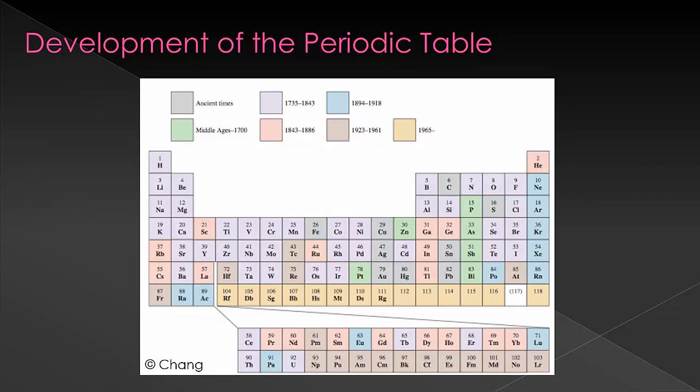After the elements were arranged by atomic number, we got a relatively modern version of the periodic table, which was able to predict where the missing elements would fall and the properties of them. In your previous chemistry classes, you probably discussed that elements within a group have similar properties due to the same number of valence electrons. But now we can talk about other trends that come from the periodic table as well.